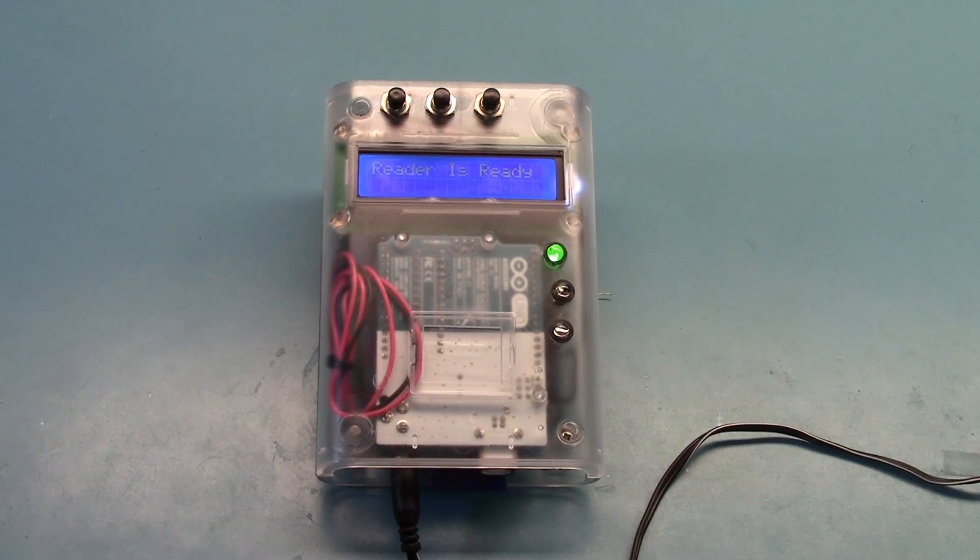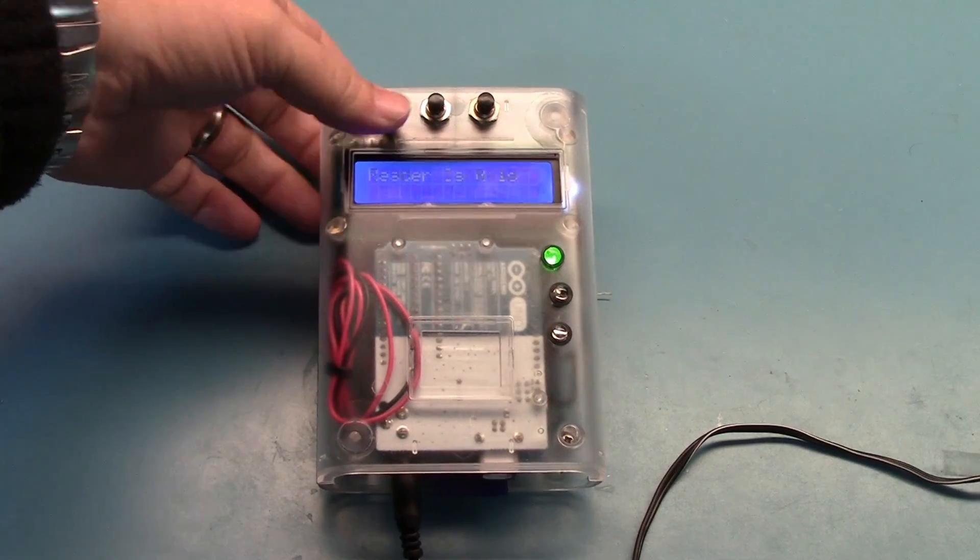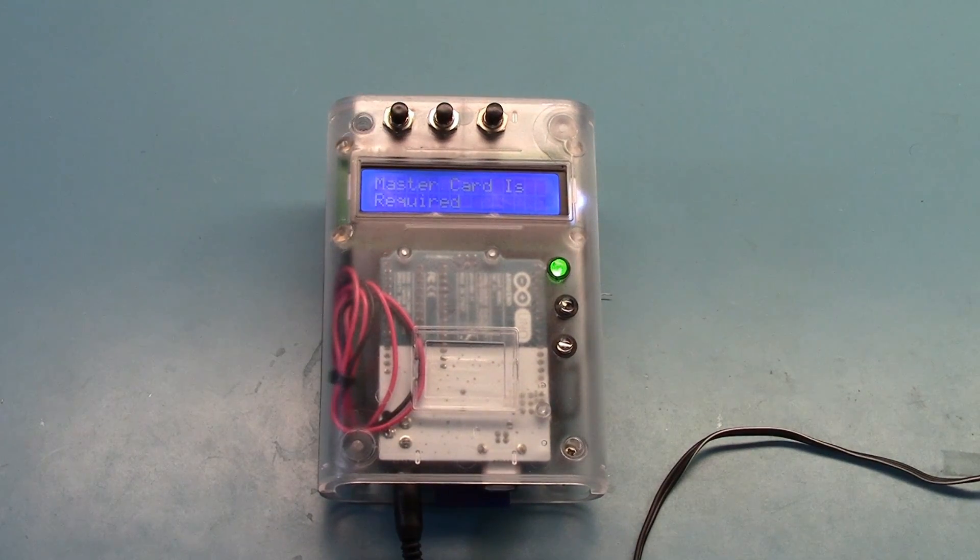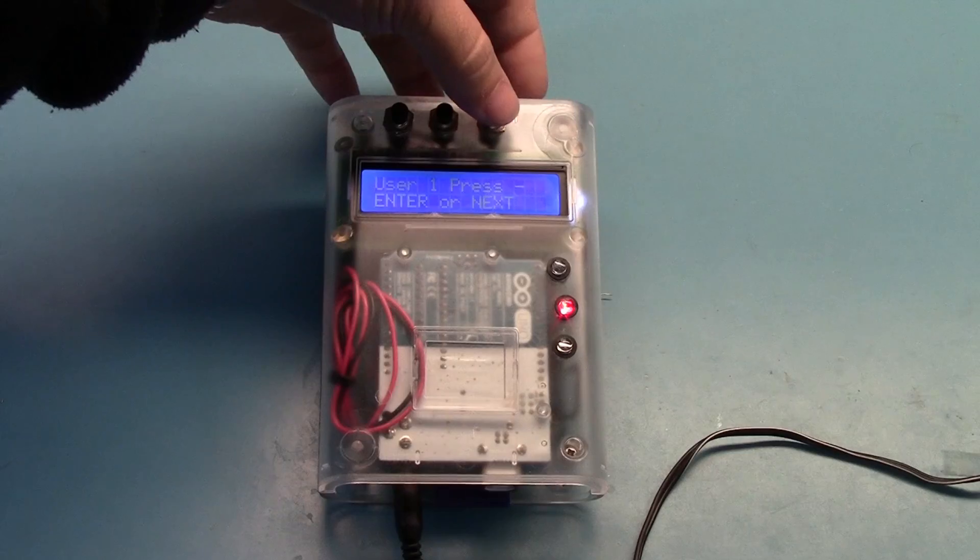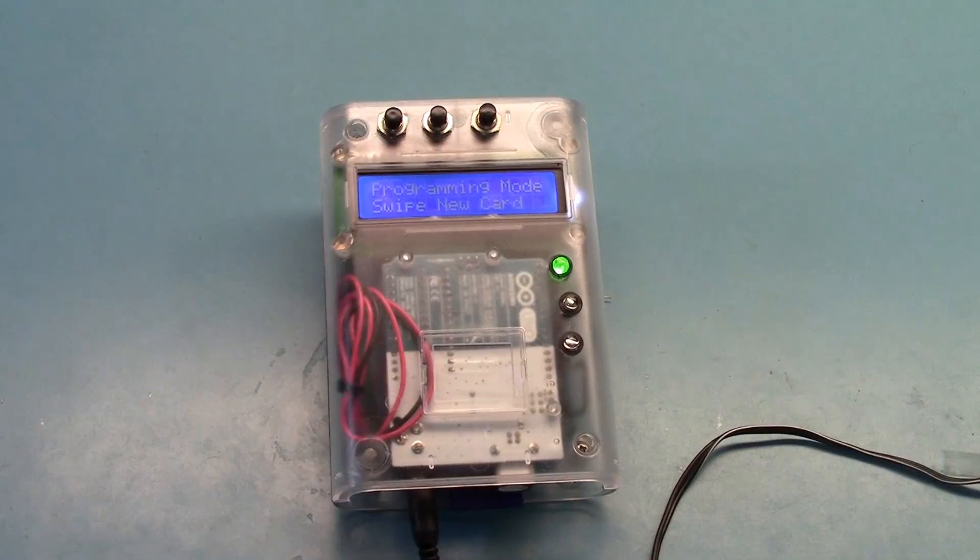So in the event that we want to replace the master user card with another card, we would simply have to overwrite it. And so we enter in programming mode. We swipe our master card. And then what we need to do is replace user one. So we will enter in that. Swipe our new card. It will update it in EEPROM and go back to a ready to swipe state. So you'll see we're still able to unlock our device.